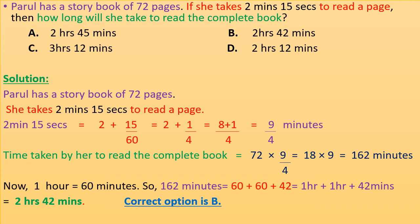Now 1 hour equals 60 minutes. So 162 minutes can be written as 60 + 60 + 42 = 1 hour + 1 hour + 42 minutes = 2 hours 42 minutes. Correct option is B.